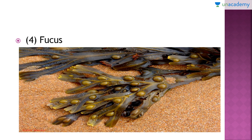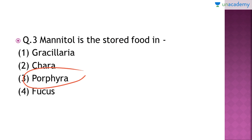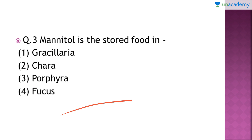Fucus, which is a type of brown algae, has mannitol as the stored food. Whereas Gracilaria and Porphyra are types of red algae and contain floridean starch as their stored food. Chara is a type of green algae and has starch as its stored food. Please do learn the table from which this question has been taken.